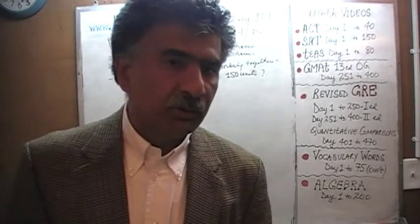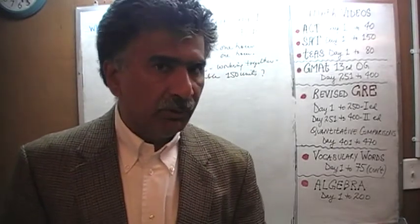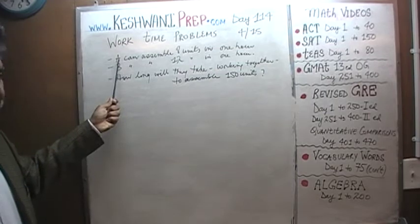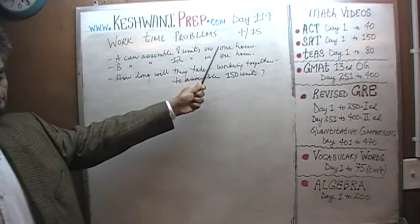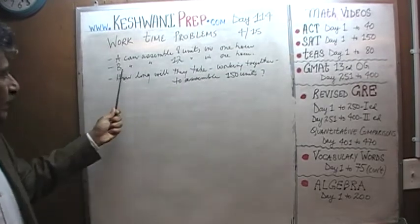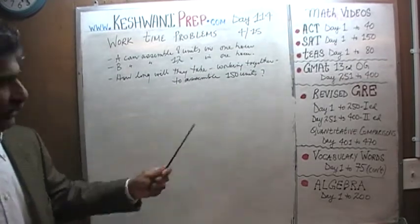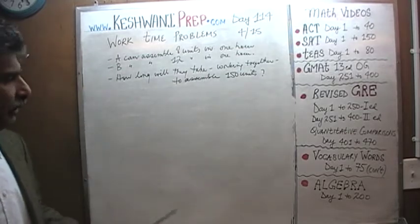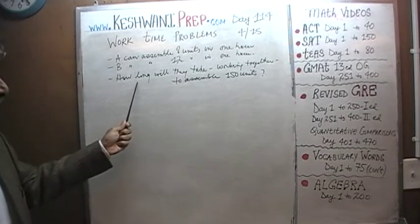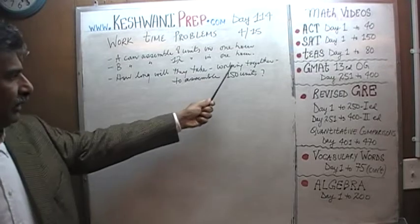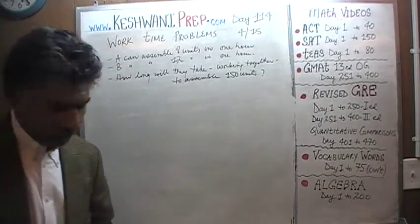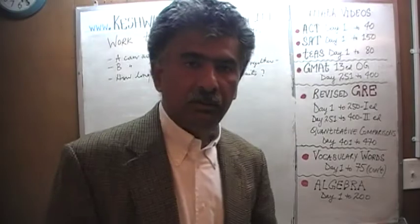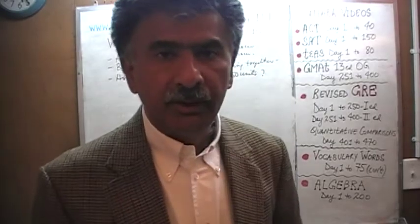The problem for today is already on the blackboard. It says A can assemble 8 units in one hour and B can assemble 12 units in one hour. The question is: how long will it take them working together to assemble 150 units?